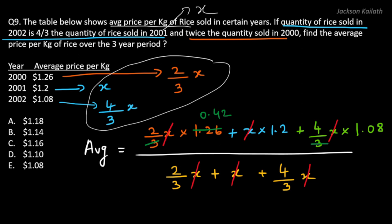And then you just need to simplify: 2 times 0.42 plus 1.2 plus 4 times 0.36, that gives you 3.48. In the denominator you have 3 because you have 1 over here and 2/3 plus 4/3 that's 6/3 which is 2, so 2 plus 1 gives you 3. So the answer is 3.48 divided by 3 which equals 1.16, which is answer option C.